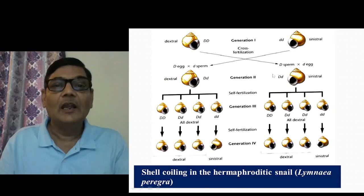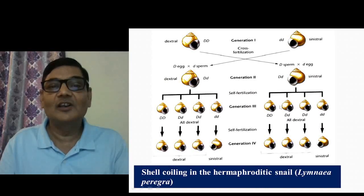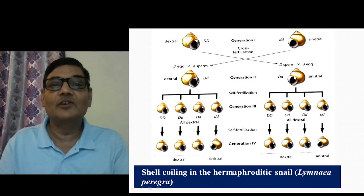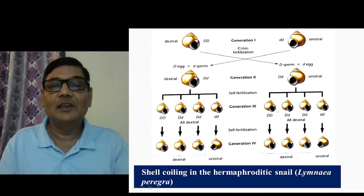In the other case, the sinistral capital D small d individual is also self-crossed, and in the next generation the offspring are all dextral type as well. This is happening because in this sinistral individual at the time of gamete formation, the capital D allele is present and gets transcribed, so its protein is present in the cytoplasm of the egg. Since this individual contains the dominant allele, the cytoplasmic content of the egg will have the protein responsible for dextral coiling, and that is why all these individuals will be dextral in phenotype.